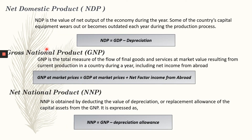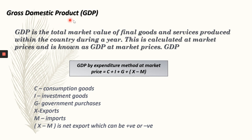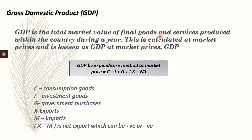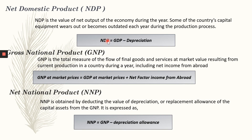Next, net domestic product. What do you mean by net domestic product? We saw gross domestic product; now we are going to see net domestic product. NDP is equal to GDP minus depreciation. GDP is the total market value of final goods and services produced within a country during a year. NDP is GDP minus depreciation. So what is this new term, depreciation? It means wear and tear of products and equipment.